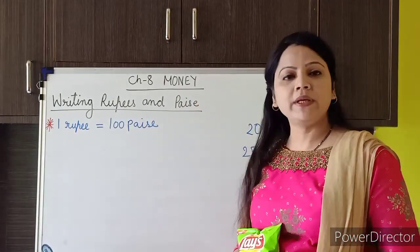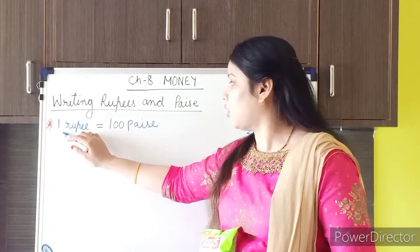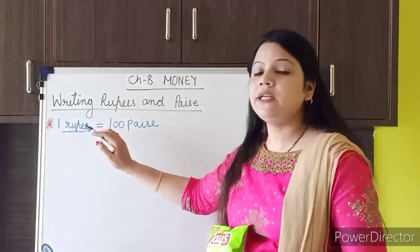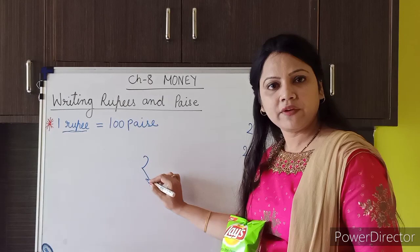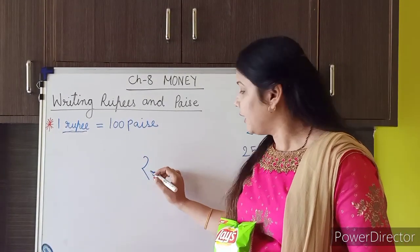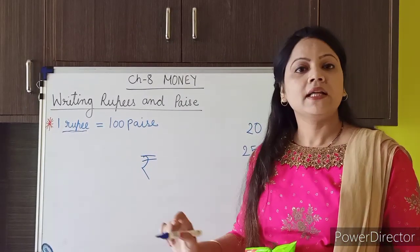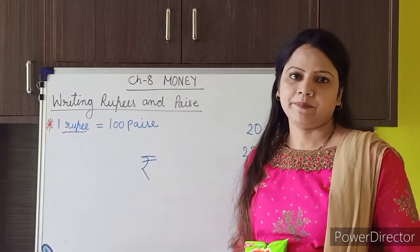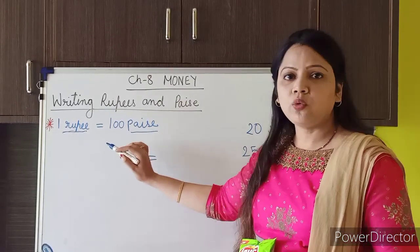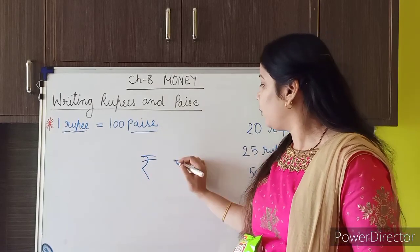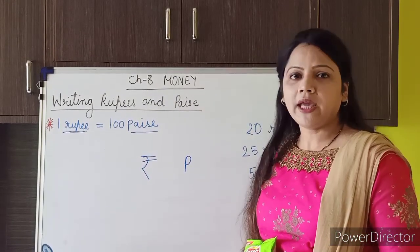Now, how can we write rupees and paise? I have written '1 rupee' but this is not the correct symbol to write rupee. For rupee, we use this symbol — first we have the R in Hindi akshar and then we give an equal-to sign. This is the symbol of rupees. And to denote paise, we don't need to write the full word paise — we will write only P.